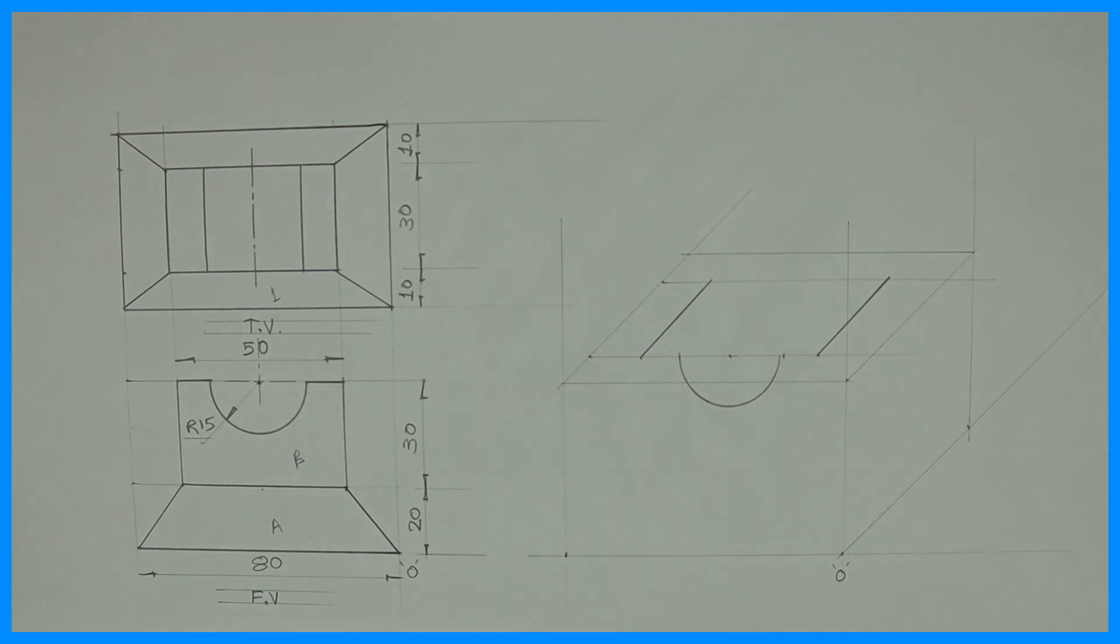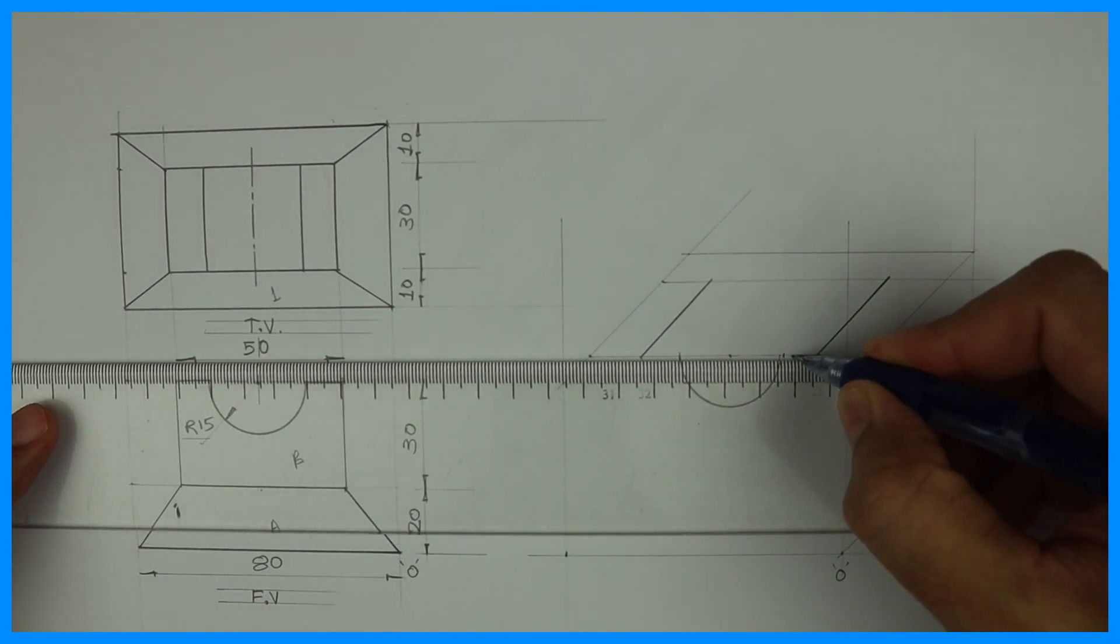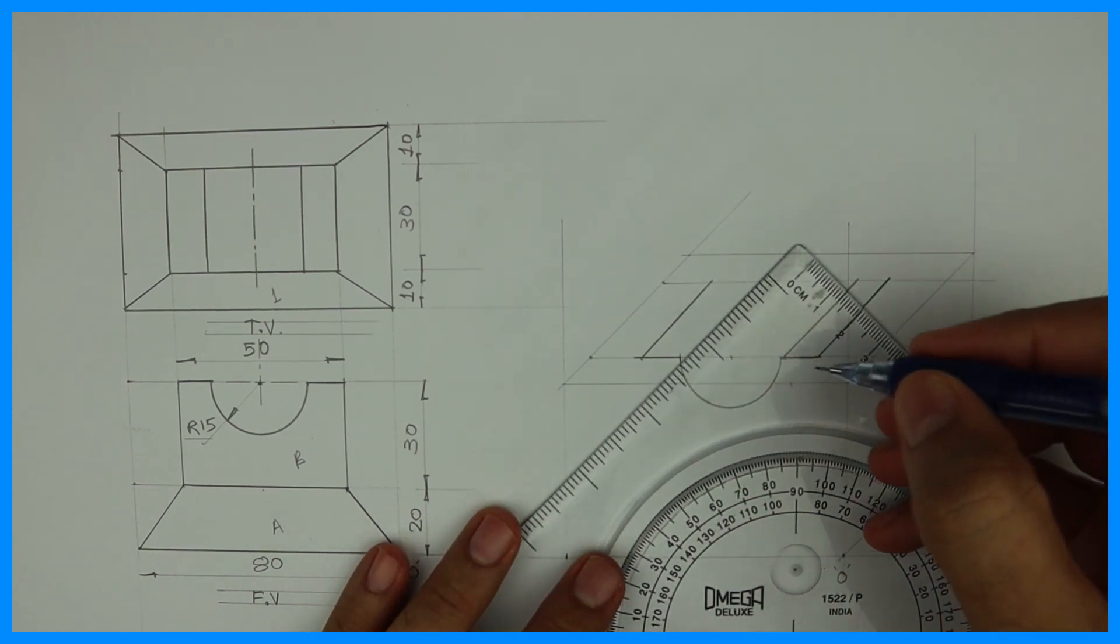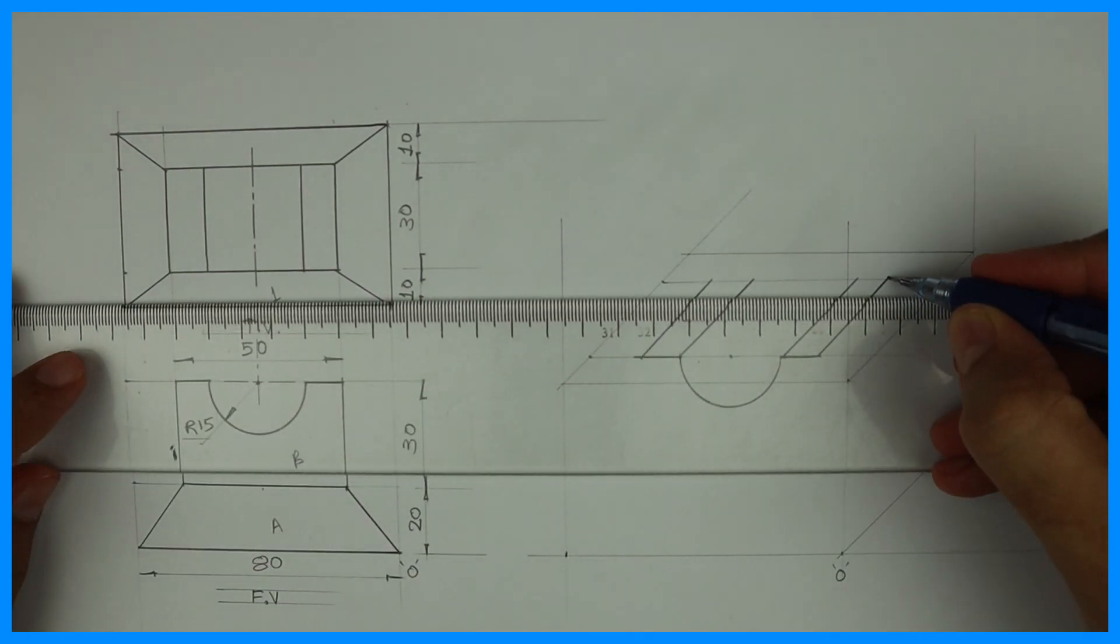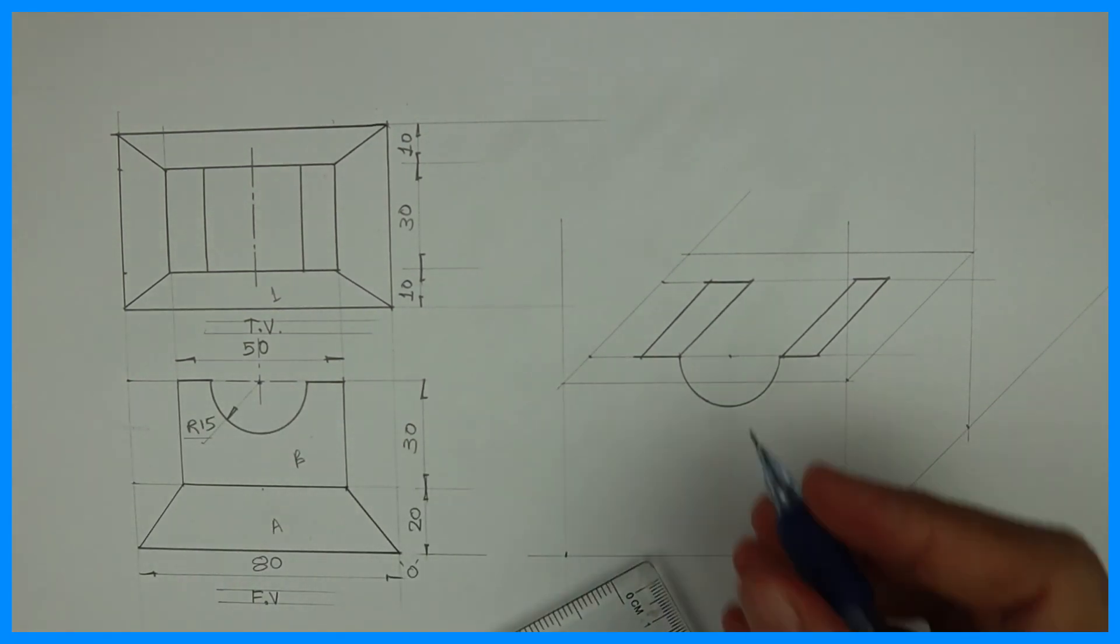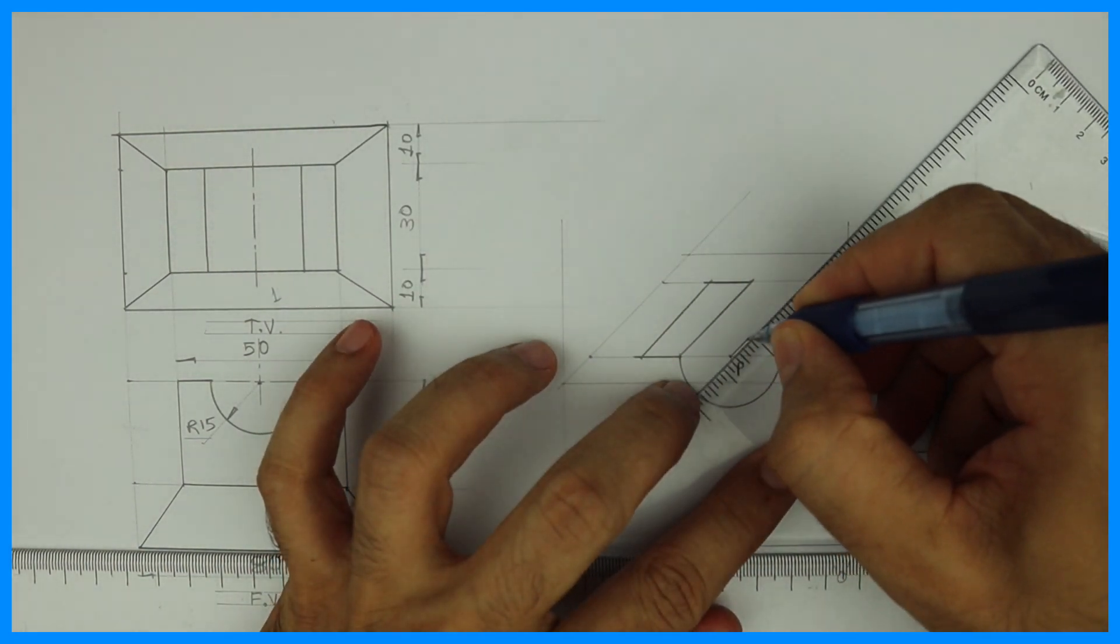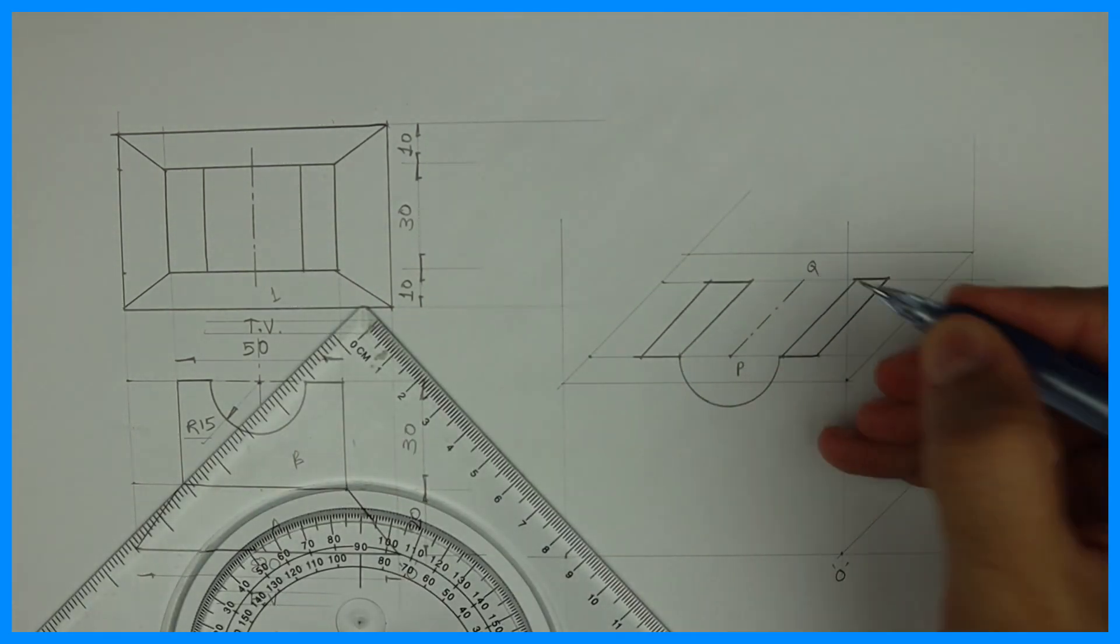So first we are drawing part B. For that we started from top view. If you see, these two are dark. This is dark. This is going behind. This is also going behind. This is dark. Dark. From this center point, P. It's going behind by how much? 30.